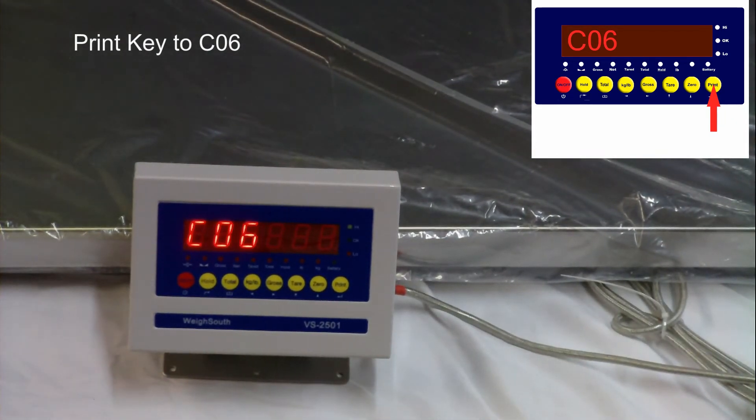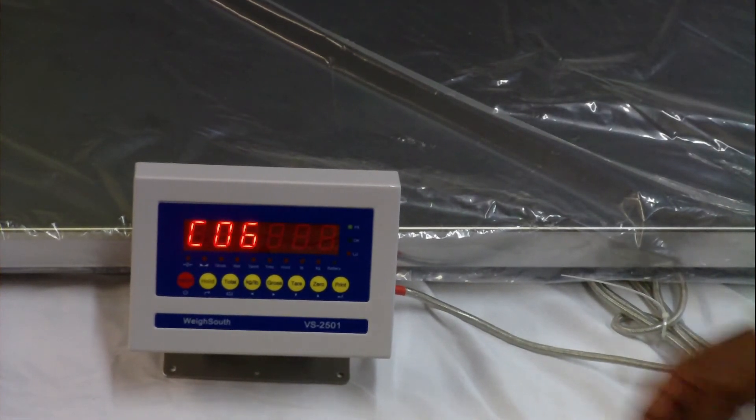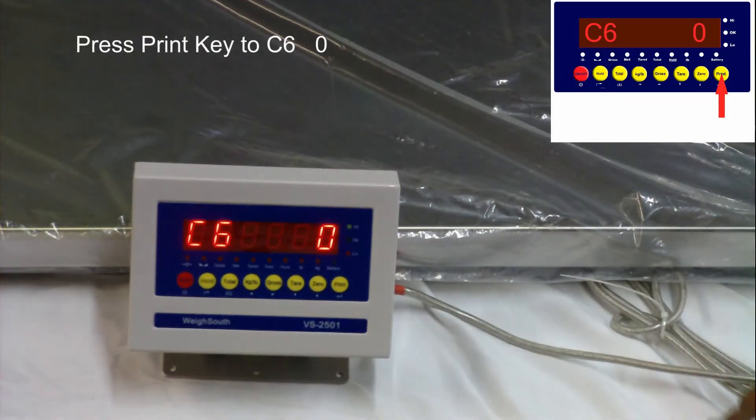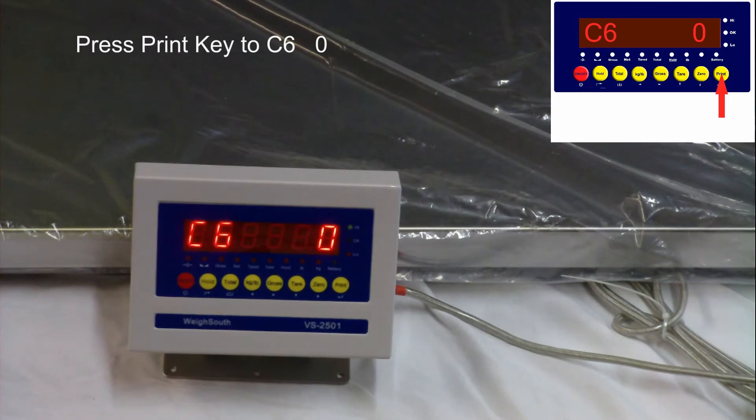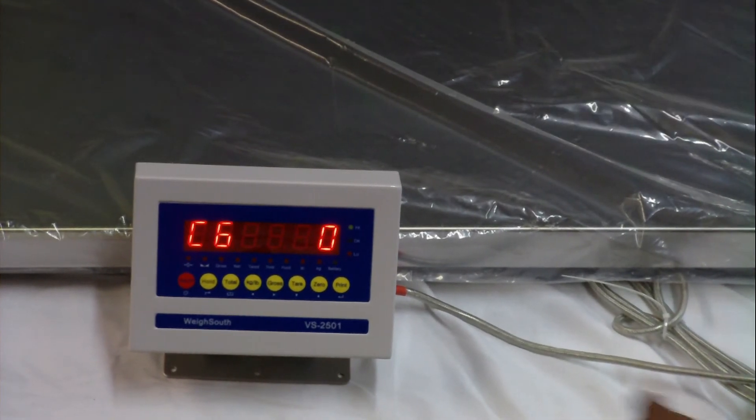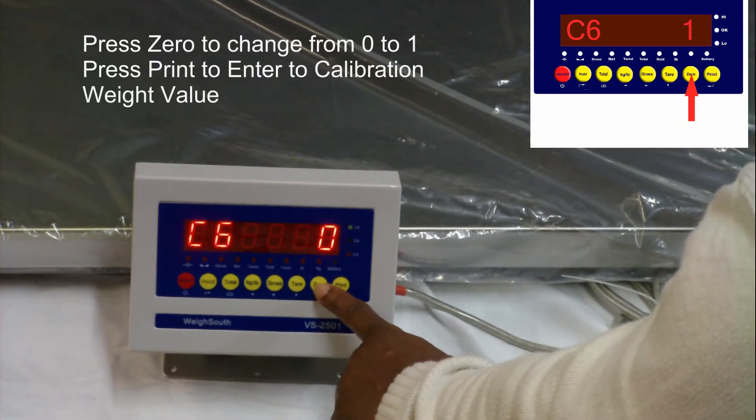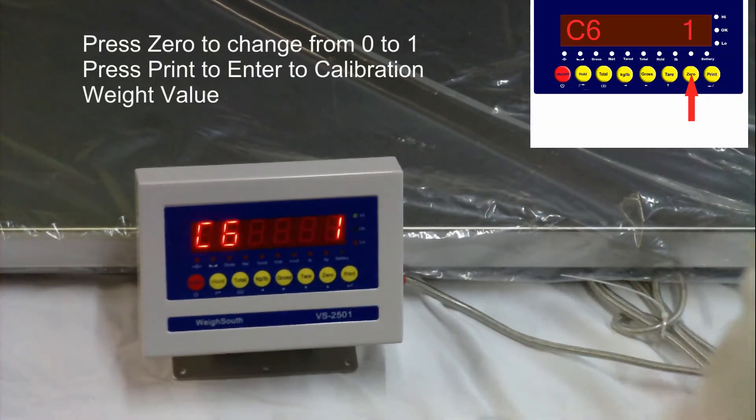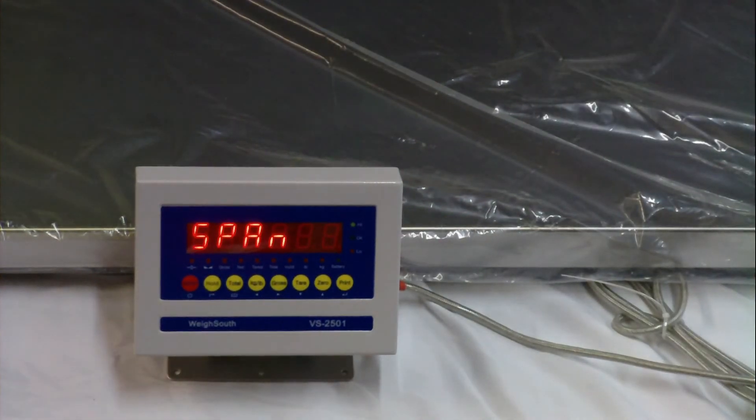Display will move and show C06. Enter the C06 submenu by pressing the print key. Your indicator will now display menu C6, submenu 0. Change the submenu from 0 to 1 by pressing the zero key and press the print key. Your indicator will flash span and then settle on a calibration weight data.